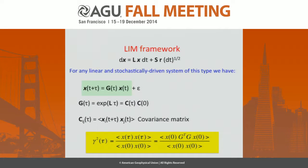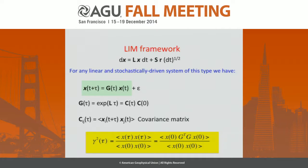For a system of this type, we can find an operator G, the resolvent, that relates the state vector at time T plus tau to the state vector at time T, making this framework very suitable for looking at precursors. The G operator can be calculated based on the covariance matrices of the system at lag zero and at lag tau. The growth in this system can be calculated within the L2 norm as the ratio between the variance of the state vector at lag tau divided by the variance of the state vector at lag zero.